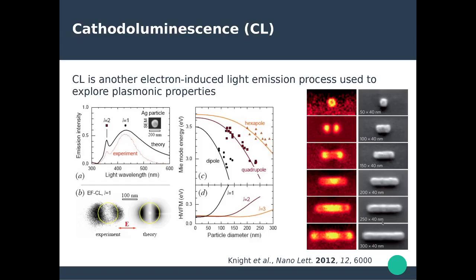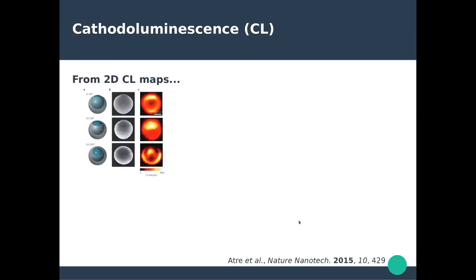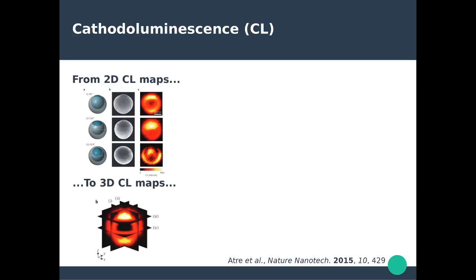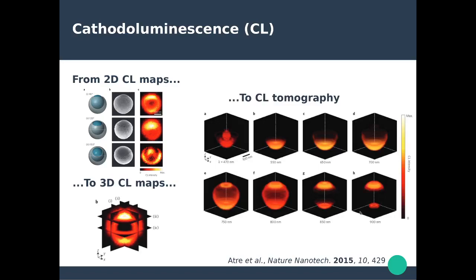Very similarly to EELS, you can generate not only two-dimensional cathodoluminescence maps but also three-dimensional cathodoluminescence maps by performing the same type of tilting. You take a succession of rotation angles, image the cathodoluminescence, and using sophisticated algorithms generate a three-dimensional tomography that illustrates what the plasmon modes are in three dimensions — here imaging the photon emission from those modes, while in EELS you image the loss probability distribution.